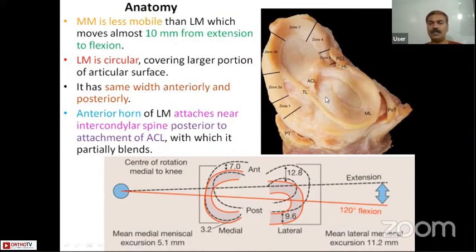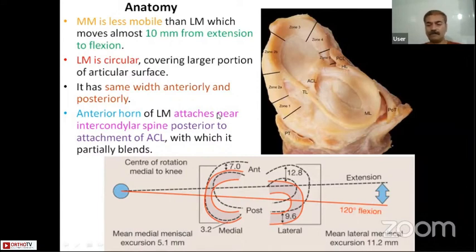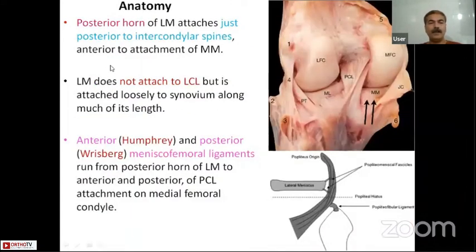The anterior and posterior widths of the lateral meniscus are similar. The anterior horn of the lateral meniscus gets attached near the intercondylar spine, posterior to the attachment of the ACL. The posterior horn of the lateral meniscus gets attached to the posterior intercondylar spine, which is anterior to the attachment of the medial meniscus.